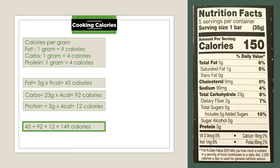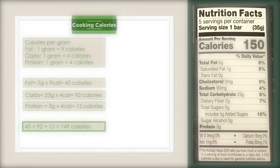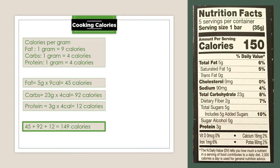Now let us proceed because we are not yet done. If you really want to estimate your total calorie intake from a packaged food, you should pay attention to the serving size and the servings per container. Serving size means the amount of food people typically consume. For this packaged food, the serving size is 1 bar or 35 grams. If you eat only 1 bar, then you will get only 150 calories as indicated in the label.